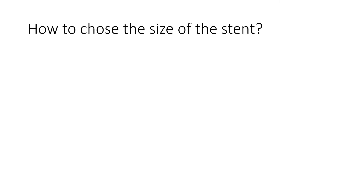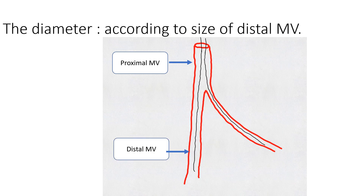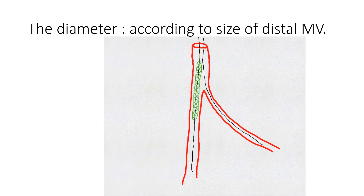An important point in all bifurcation stenting is to choose the right size of the stent, involving both the diameter and the length. The diameter of the stent should be chosen according to the size of the distal main vessel. A diagram shows a bifurcated artery with the proximal and distal main vessel. The stent is deployed across the side branch from distal to proximal, so the diameter should match the size of the distal main vessel.